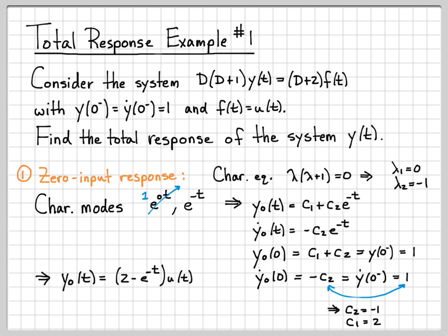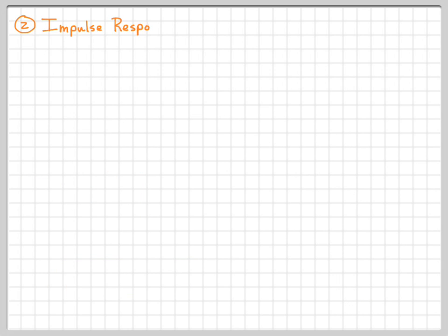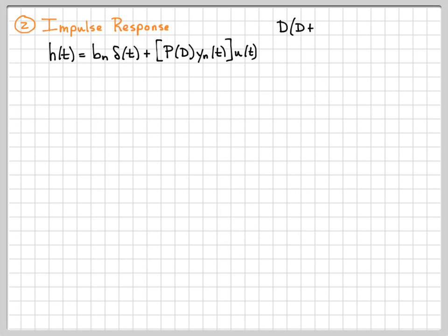We now know the zero input response. The other piece we need is the zero state response. To compute the zero state response, I need to know the impulse response. So as a next step, let's solve for the impulse response of the system. We'll use our general equation for the impulse response. Here is the system we're working with — on the left side, this is a second order polynomial in d.